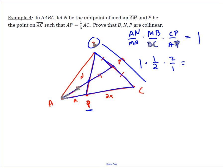Multiplying these together—1 times 1/2 times 2/1—equals one, which is what we needed to use Menelaus's theorem to show that B, N, and P are collinear. This is a good example of how to use Menelaus's theorem.